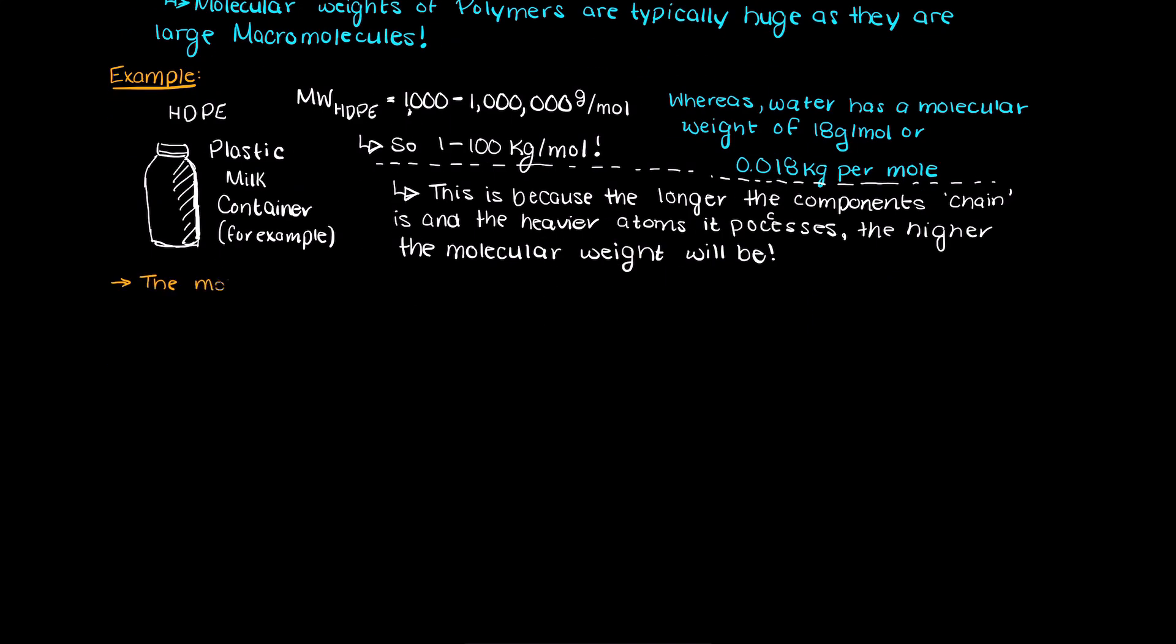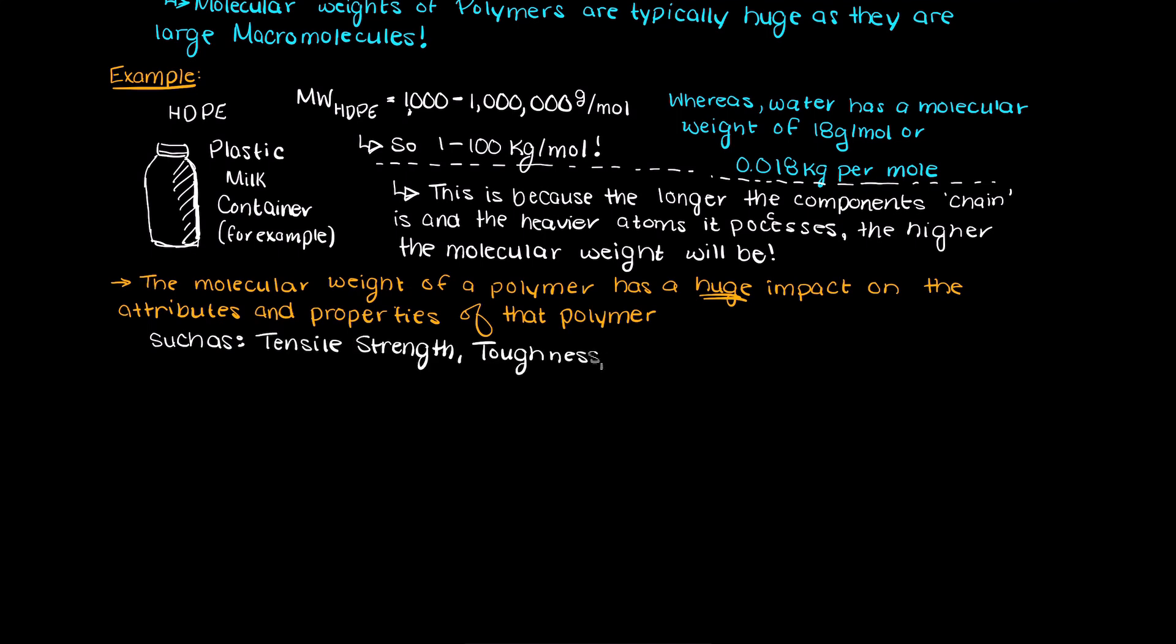This molecular weight has a large impact on many properties of the polymer, such as its tensile strength, toughness, elongation to break, which is how stretchy the polymer is, melting temperature, stress crack resistance, and many other things. So, understanding the molecular weight of the polymer you may someday be working on is very important.